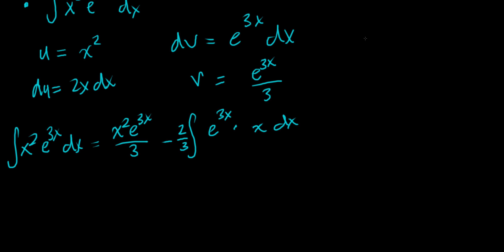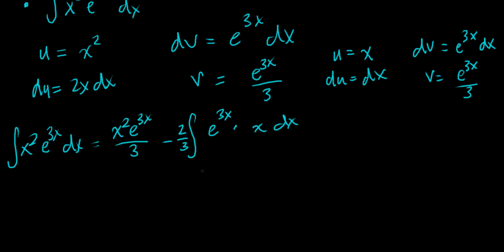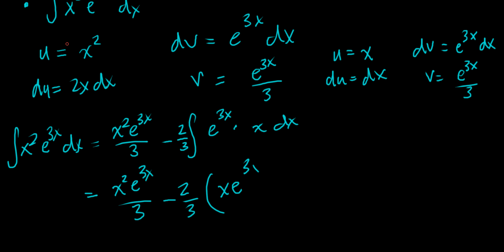For this integral of x times e to the 3x, let u equal x, so du equals dx, and let dv equal e to the 3x dx. Then v is just what we had before — e to the 3x over 3. Coming down and rewriting everything, we have negative 2 thirds out front multiplied by this second iteration: u times v is x times e to the 3x over 3, minus the integral of v du, which is 1 third times e to the 3x dx. Now we can solve this integral straight away without any further application of integration by parts.